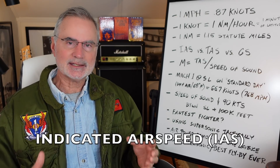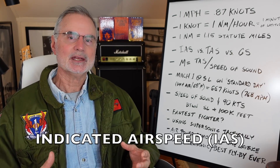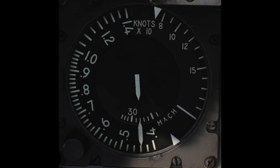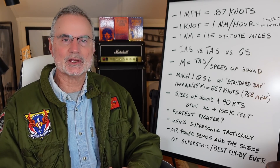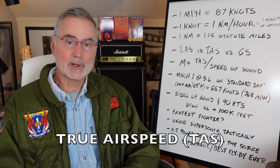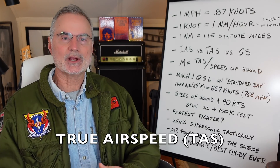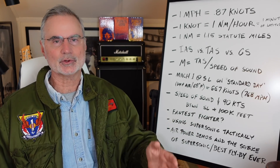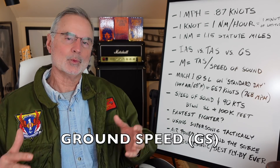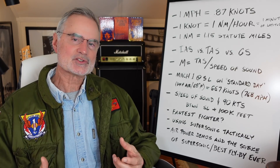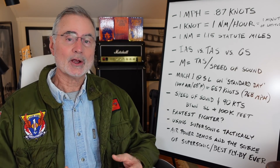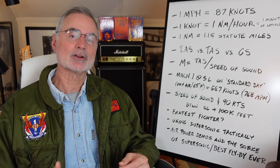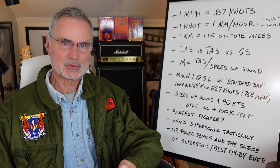First you have indicated airspeed — as the name implies, it's the number indicated on your airspeed gauge in the airplane. The second unit is true airspeed: how fast you're actually passing through the air. And the third is groundspeed. When you're talking about how fast supersonic is, the question is: are you talking about what you're reading on your gauge, how fast the airplane is going through the sky, or how fast you're translating across the ground?